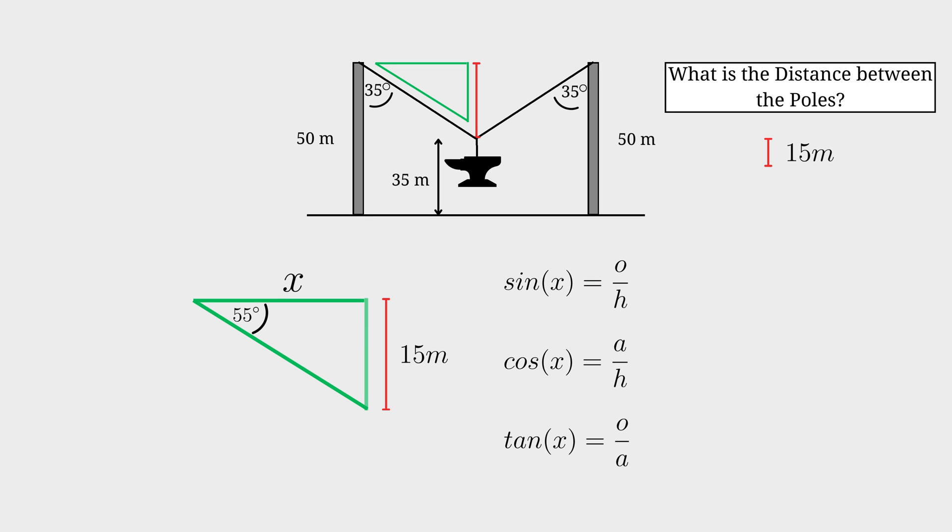Now we have the opposite side of the 55 degree angle and we have the adjacent side of the same angle. So we are going to use the tan function and not the other two because we don't have the hypotenuse. Tan is opposite over adjacent. The opposite side is 15. The adjacent side we can call x and the angle is 55 degrees.